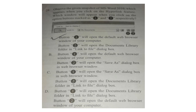Question 29: Observe the given snapshot of MS Word 2010, which appears when you click on the hyperlink feature. Which window will appear when you click on the option buttons marked as 1 and 2 respectively? The correct answer is option A. Button 1 will open the default web browser window of your computer and button 2 will open the documents library folder in the Link to File dialog box.